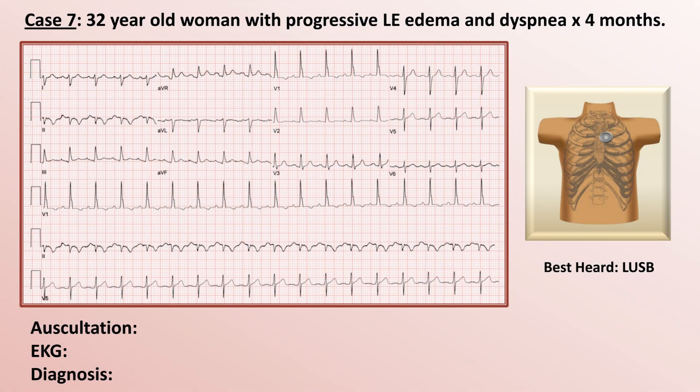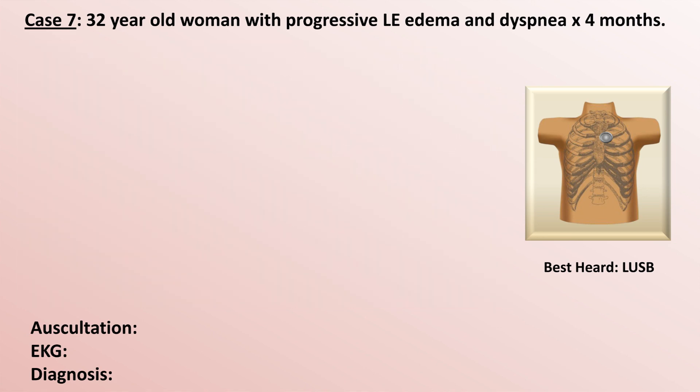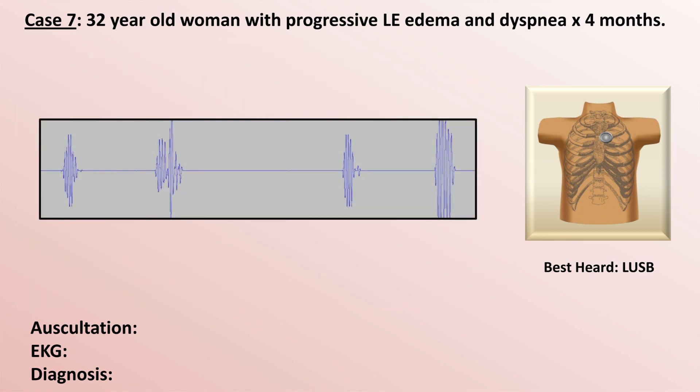Case 7: a 32-year-old woman with progressive lower extremity edema and dyspnea for four months. Her heart as it sounds at the left upper sternal border — there will definitely be respiratory variation in this example, so listen closely. This is a little subtle, so don't be disappointed if you do not hear it, but her S2 is significantly louder than normal, even for listening at the upper sternal border.